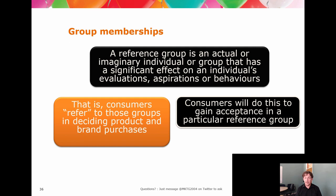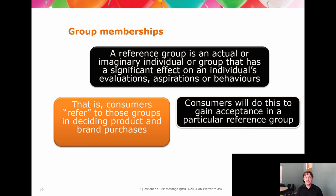We can sell group membership — 'wear these sunglasses, look like this Prime Minister; dress this way, fit into this group.' But we can also sell group rebellion. Coca-Cola sells you the summer of love where everyone's friends together, while Sprite sells you individuality and loner-ship. It's the same company — the Coca-Cola Company selling you both group membership and group exit.